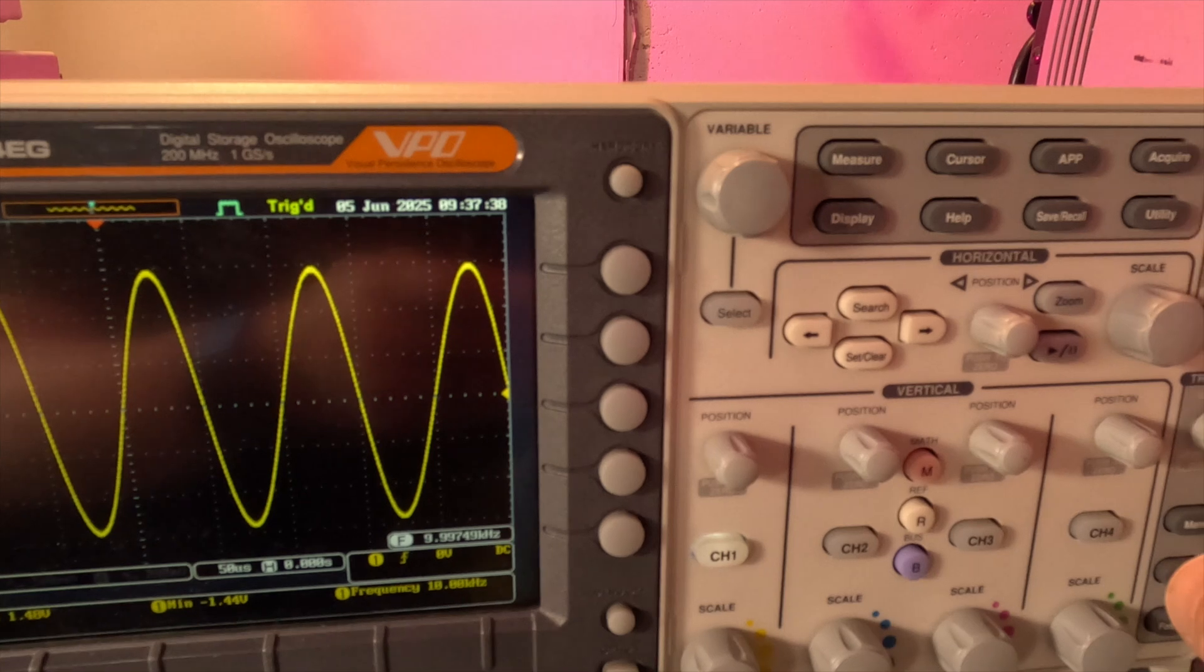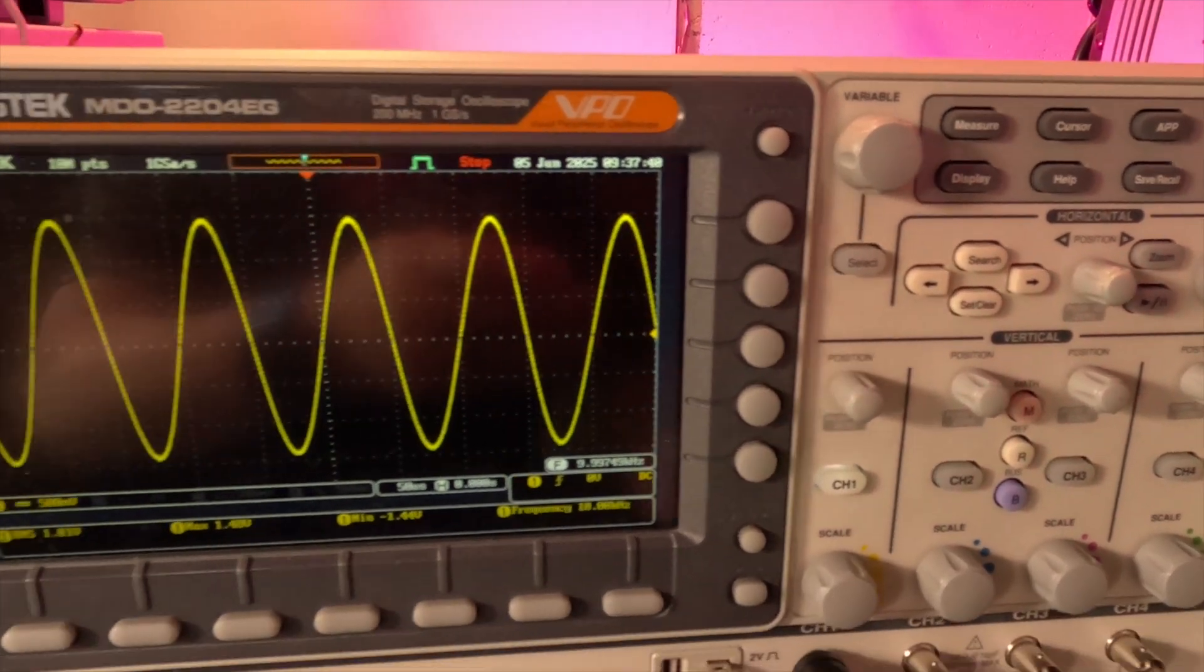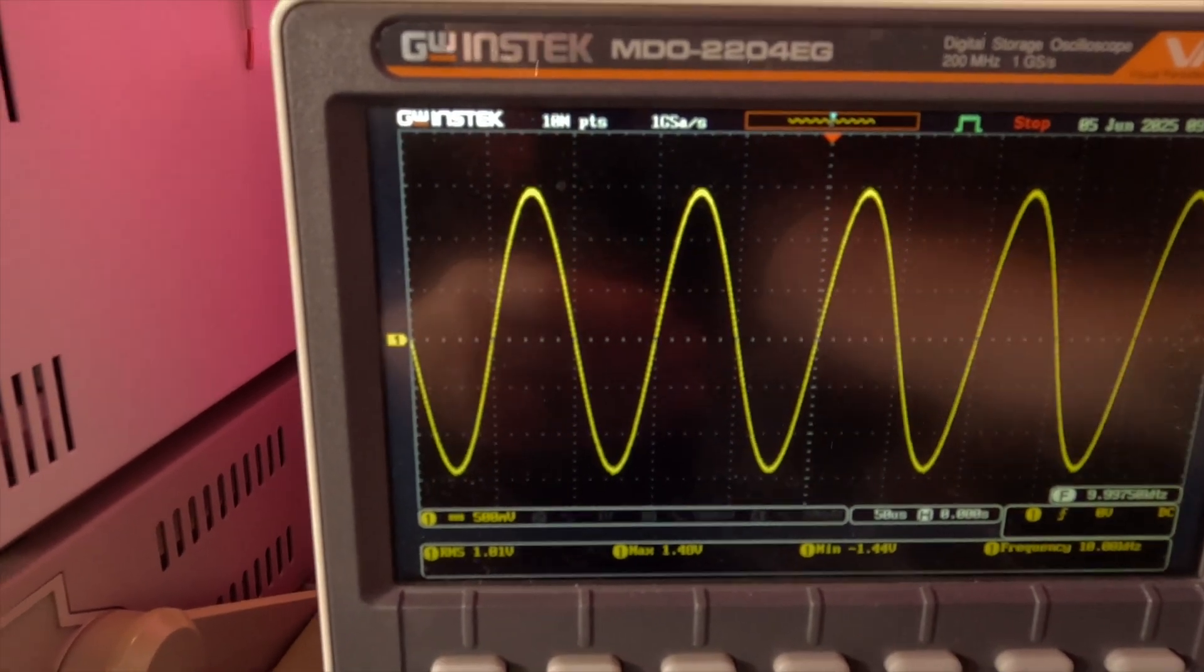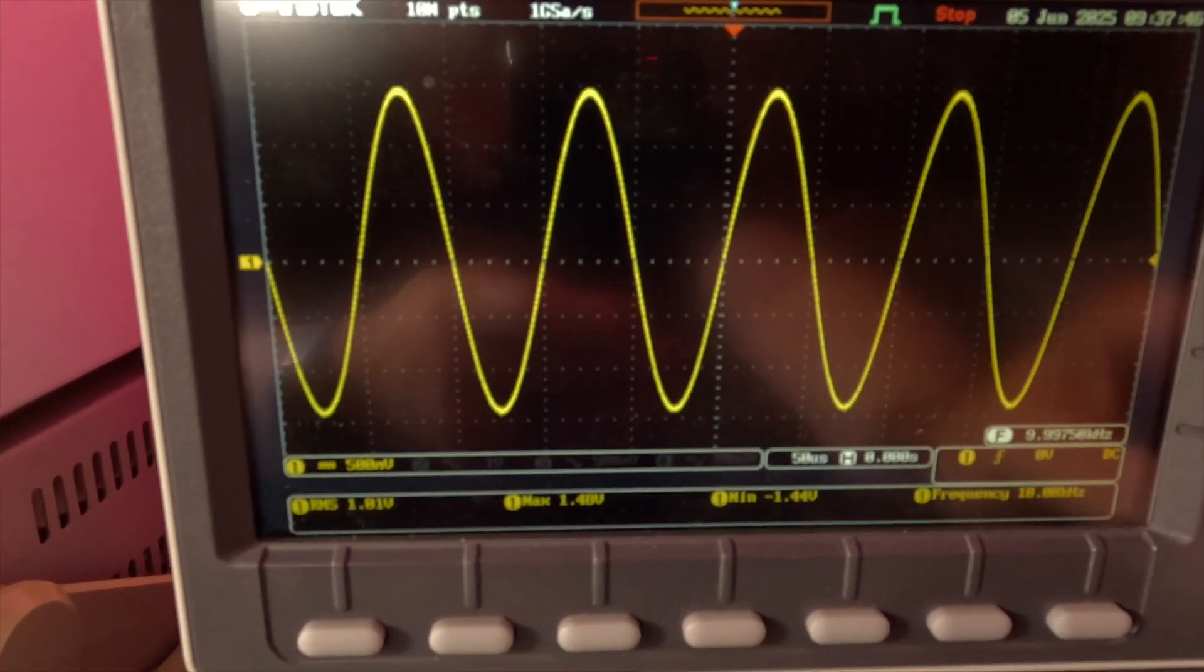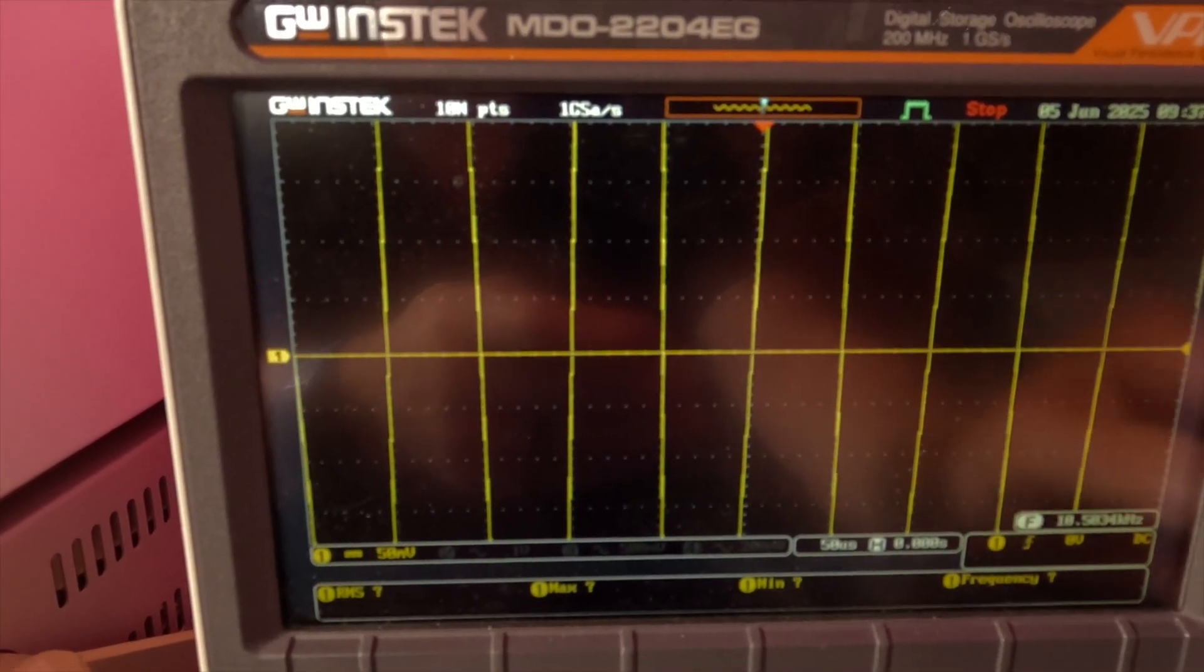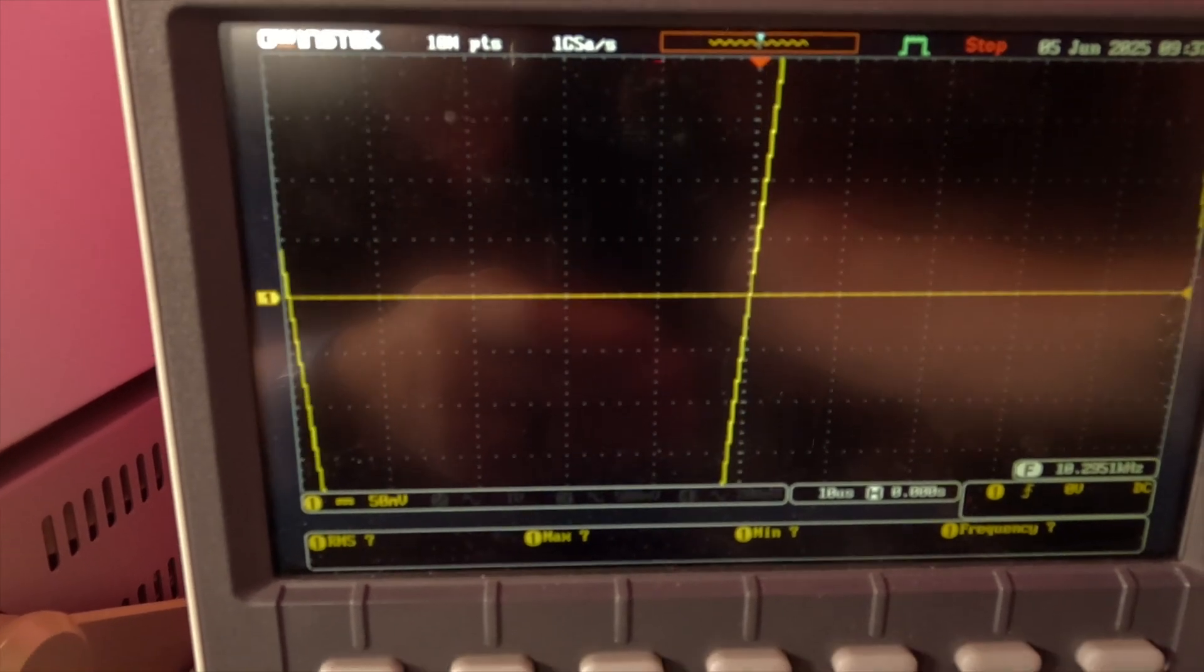So now what we're going to do is we're going to lock all the scopes, freeze them. Now what I'm going to do is I am going to blow it up to 50 millivolts is what I want to go to, 50 millivolts, then I'll spread it out.